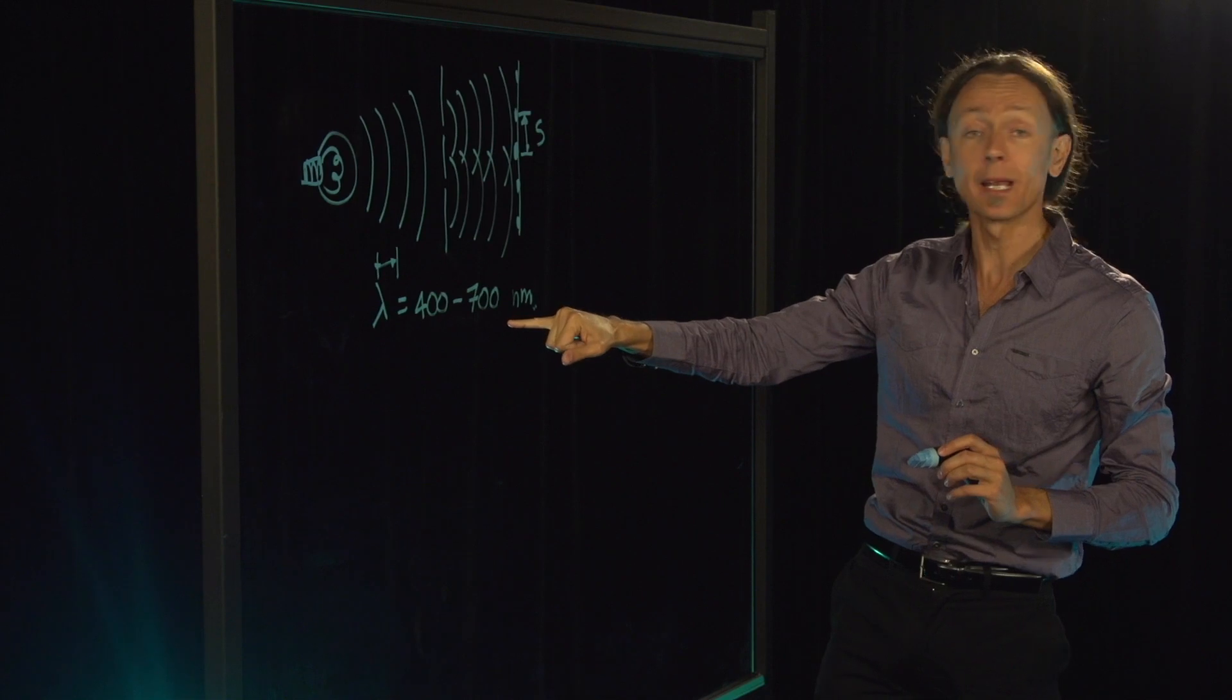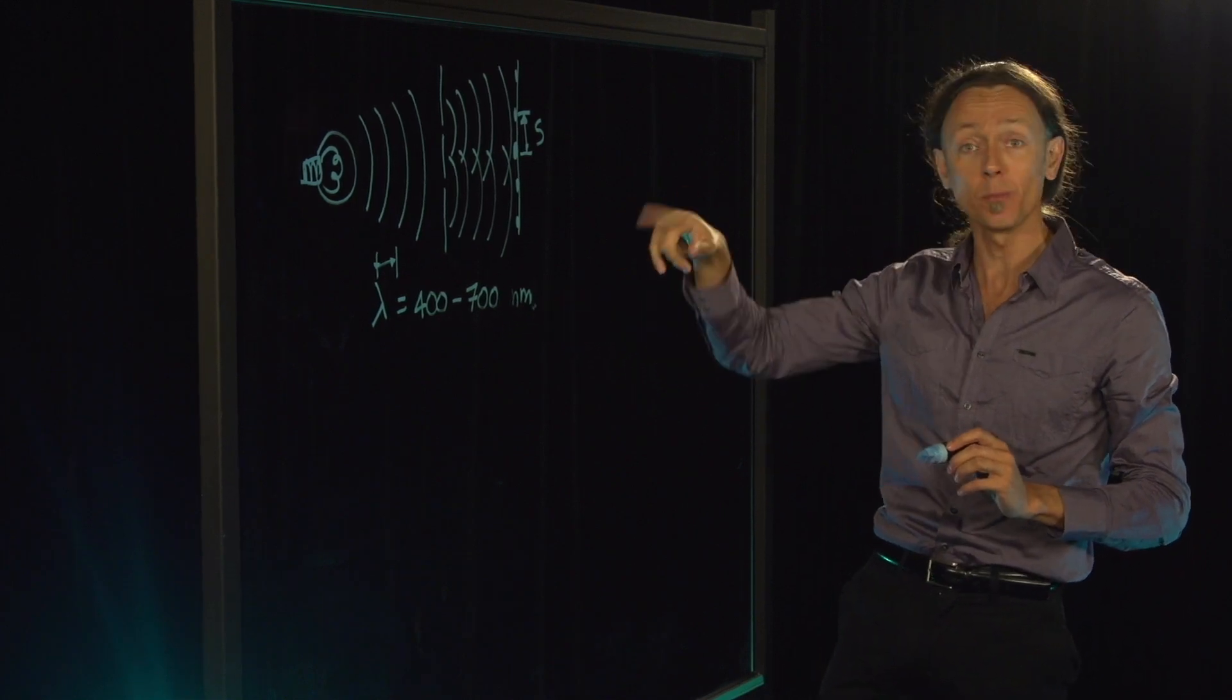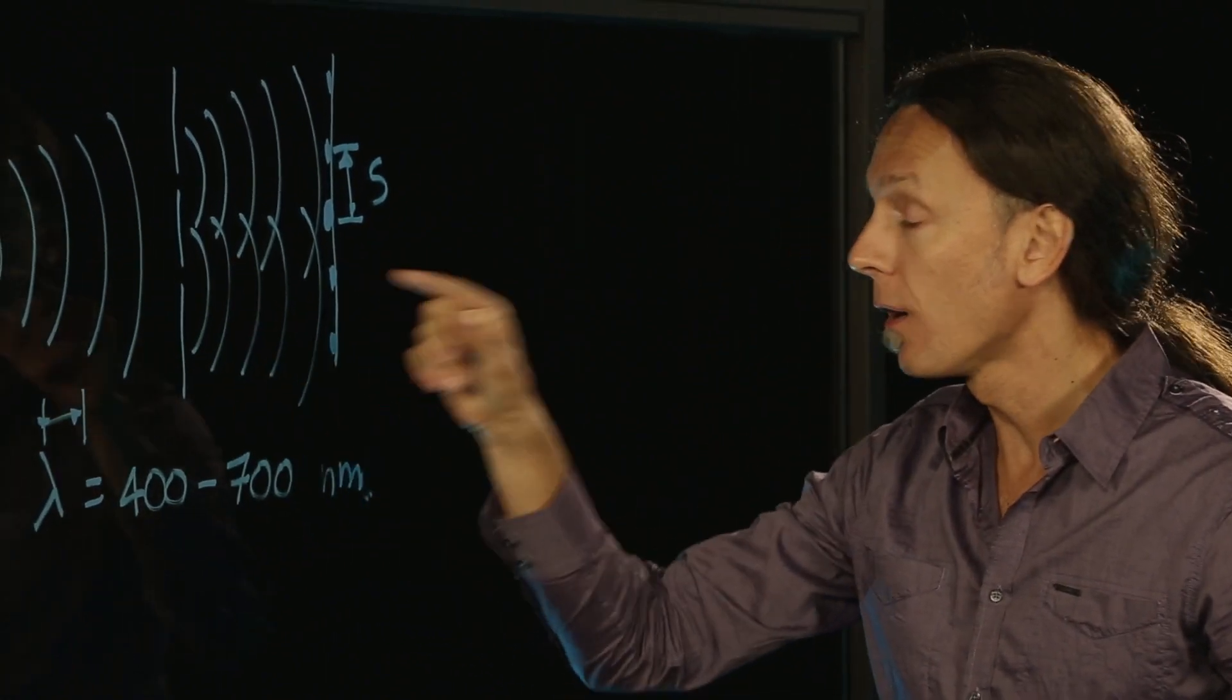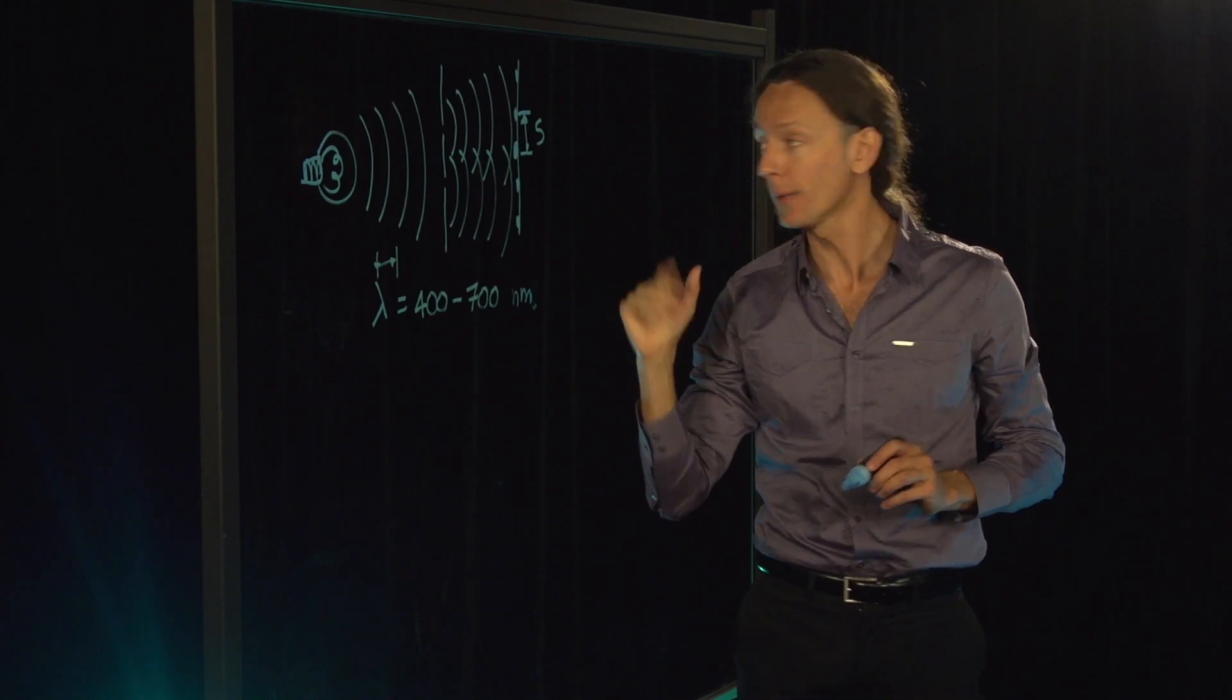So if you take red light, which is about 700 nanometer wavelength, there will be 30 maxima of the electromagnetic field of a red light within the thickness of your hair.